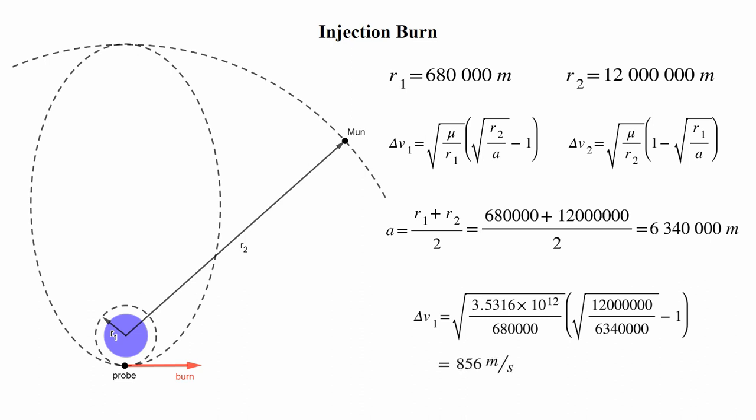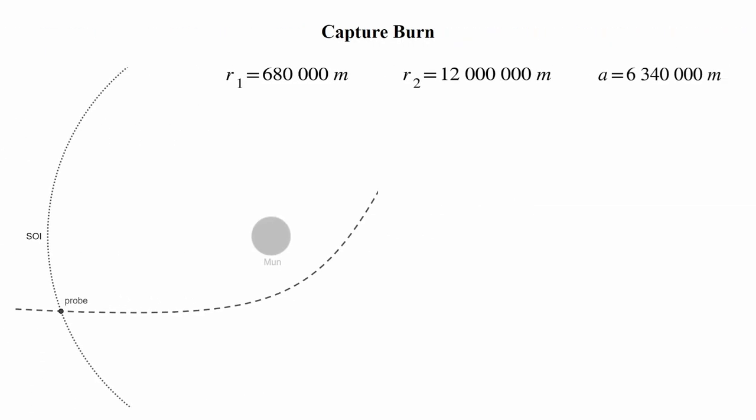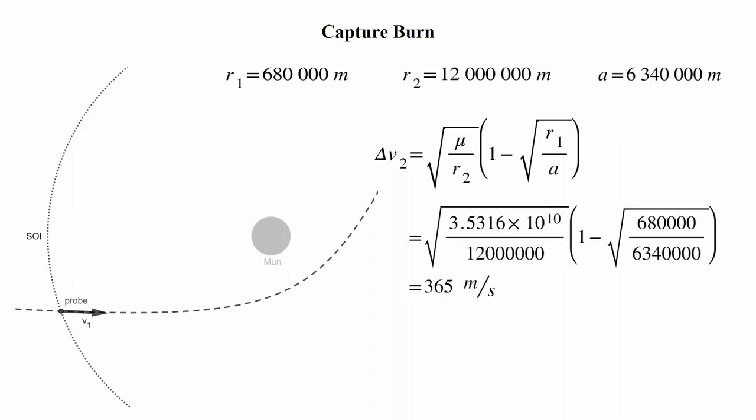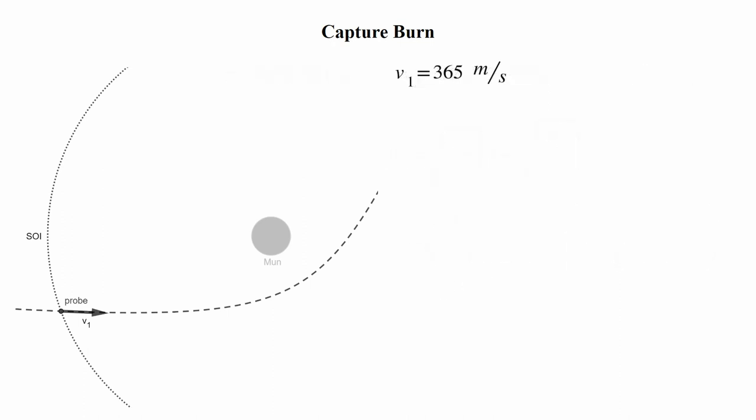Next, we need the speed relative to the moon at which we will be encountering its sphere of influence. We'll call this v1. This velocity will be the velocity we would need to add on to match the orbital velocity of the moon, which is exactly what we get from the second vis-viva equation. Sticking in our same values as before gets 365 meters per second. Of course, we aren't performing a burn here.